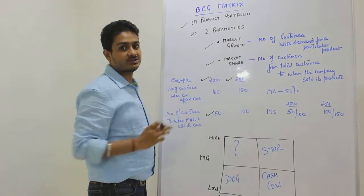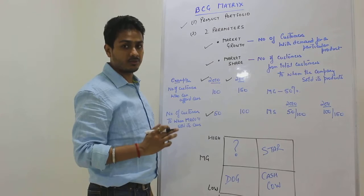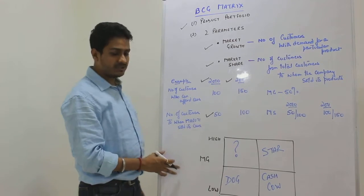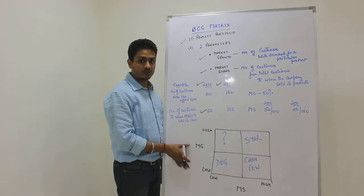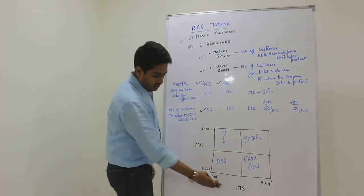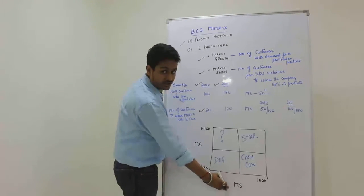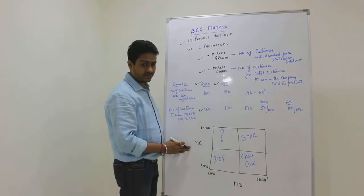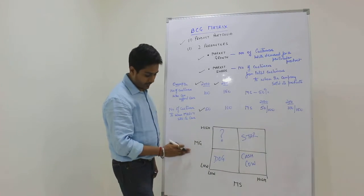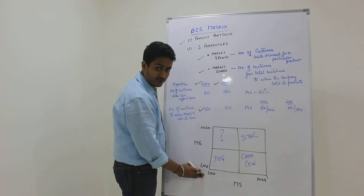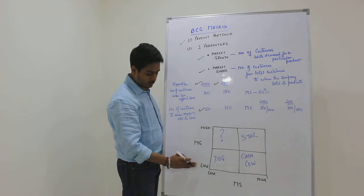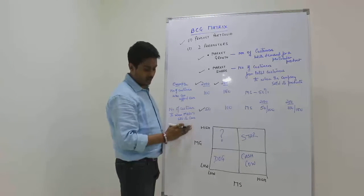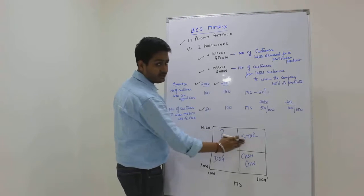Now these are two parameters based on which the company will classify their products. Boston Consulting Group is a 2x2 matrix. On the bottom axis we have market share, on the side axis we have market growth. Market share can vary from low to high, likewise the market growth can also move from low to high.